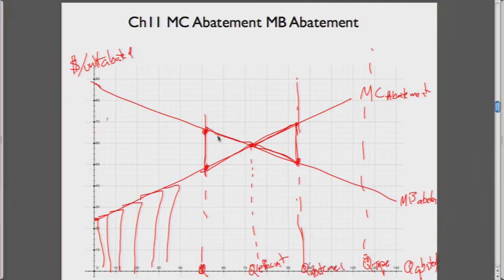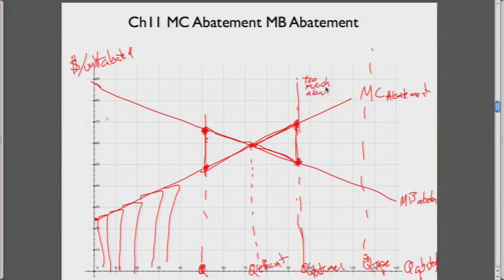In these graphs, if the regulator set the abatement level too low, there would still be too much pollution because the marginal benefits of decreasing pollution would be greater than the marginal cost of cleaning it up. If the regulator set it too high, there's too little pollution because society is bearing costs where the marginal cost of cleaning up that much is higher than the marginal benefits. So this one is too much abatement, or too little pollution, and this one still has too much pollution.